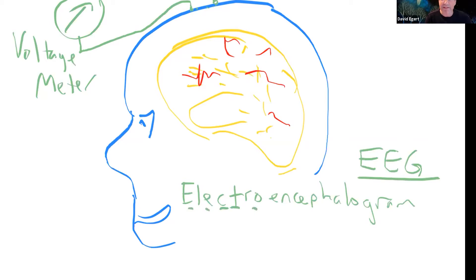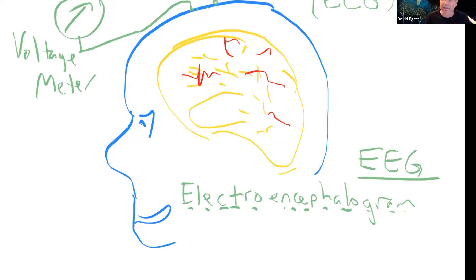Electro refers to electrical current or voltage, encephalo means the cerebral hemispheres, and gram means a picture. We have a similar thing when we get to the heart — the EKG or electrocardiogram is electrical activity measured on the skin generated by heart activity. For EMG, it's electrical activity on the skin generated by muscle depolarization. But for today, we're going to look at EEG.